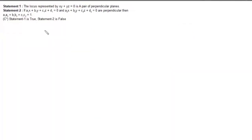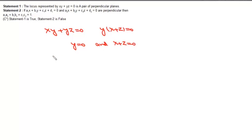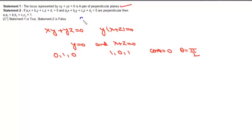The locus xy + yz = 0 can be written as y(x + z) = 0, giving the two planes y = 0 and x + z = 0. Direction ratios of normals are (0,1,0) and (1,0,1). Taking the dot product gives cos(theta) = 0, so theta = pi/2 — the planes are perpendicular, and statement 1 is correct. Statement 2 says the dot product equals 1 for perpendicular planes, which is incorrect; it should equal 0.